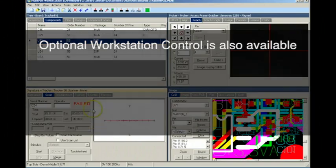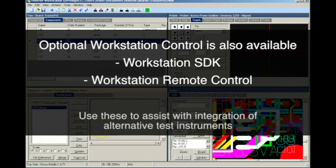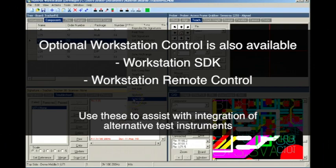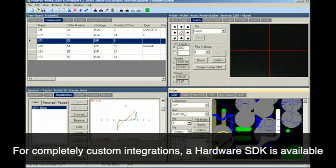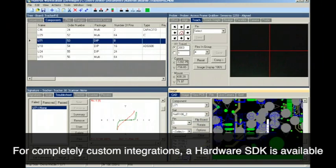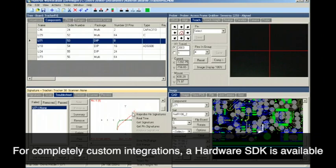Control of the AXS DH is also possible using the Workstation SDK or Workstation Remote Control to assist with integration of alternative test instruments such as oscilloscopes, DMMs, and spectrum analyzers. For a completely custom option, Huntron offers a hardware SDK that helps you create your test applications using the AXS DH.